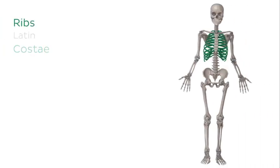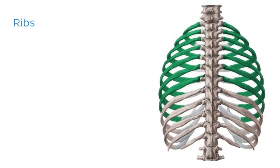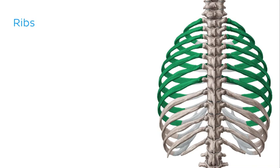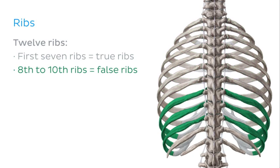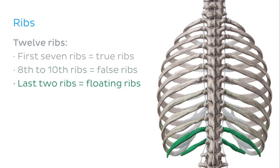Continuing with the bones of the trunk, next we'll look at the bones of the ribcage. There are 12 ribs that make up the ribcage. Although all 12 ribs articulate with the vertebral column, only seven of them articulate directly with the sternum — these are known as true ribs because they attach to the sternum directly via their own costal cartilages. The eighth to tenth ribs are known as false ribs because they articulate with the sternum indirectly through the cartilage of the seventh rib. The last two ribs are known as floating ribs because their costal cartilages tend to end within the abdominal musculature.